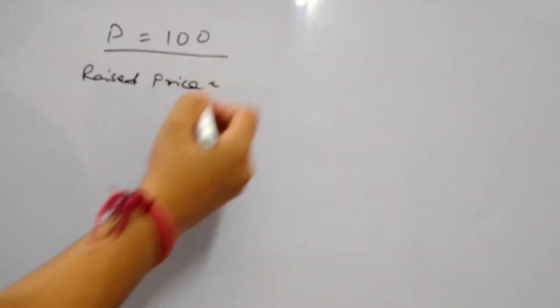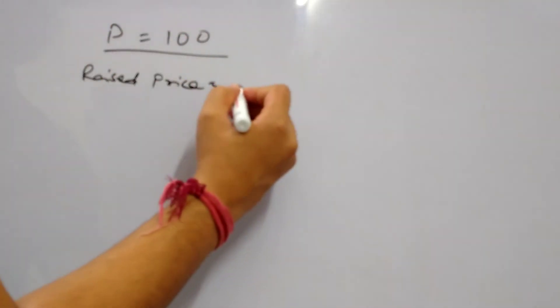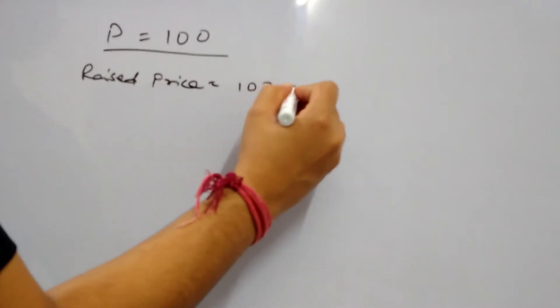Let's say the price of product is P and we are assuming it is equal to Rs.100. Then the raised price of the product, shopkeeper is raising the price by X%, so the raised price is 100 plus X.